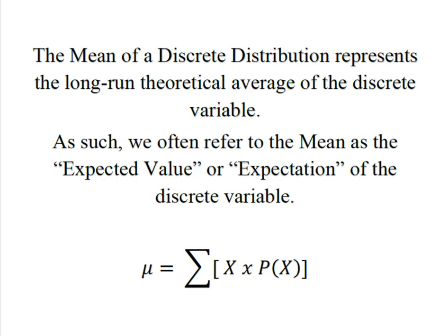It's fairly easy to calculate. We simply take each outcome x, multiply it by the probability of getting that outcome and then we sum all of them together.